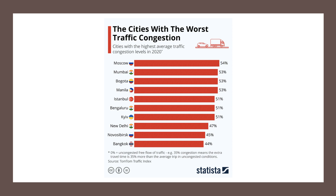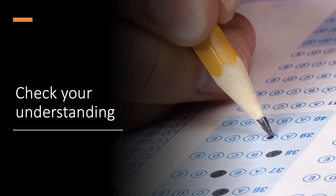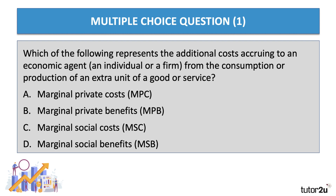So we've covered negative externalities from production and negative externalities from consumption — no diagrams in this video yet. Let's think about some simple multiple choice questions to check your understanding. Question one: which of the following represents the additional costs accruing to an agent from the consumption or production of an extra unit of a good or service? The correct answer is A — the marginal private cost, or the internal cost of production or consumption.